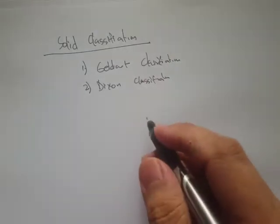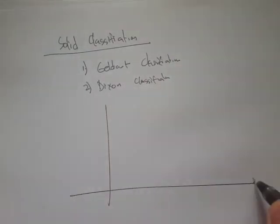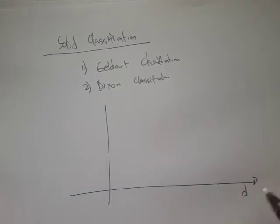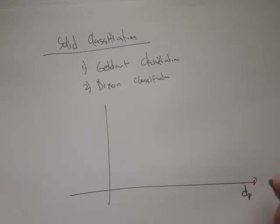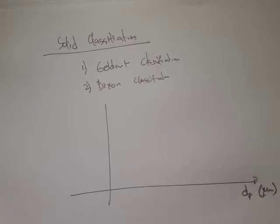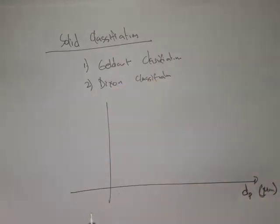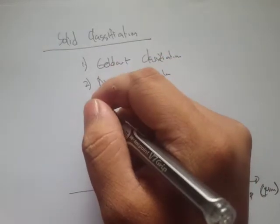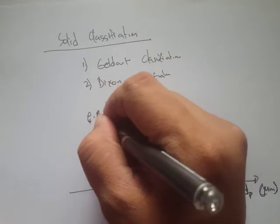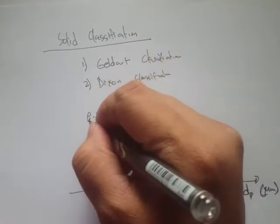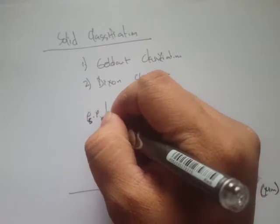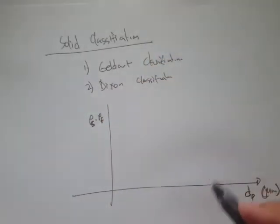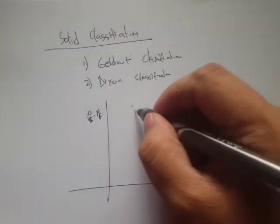Basically, the classification is based on the particle size — let's say d sub p, in micrometers or whatever distance units — and on the difference in density: the density of the solids minus the density of the fluid or air. We have a graph based on these two axes.